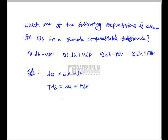The internal energy du can be written as dh - pdv + pdv. Enthalpy is the sum of internal energy and the product of pressure and volume. So we can write internal energy as dh - pdv, and from this we get dh - pdv - vdp + pdv.